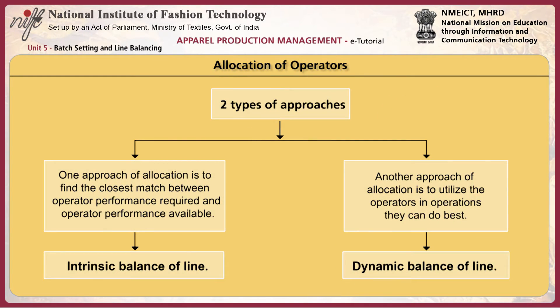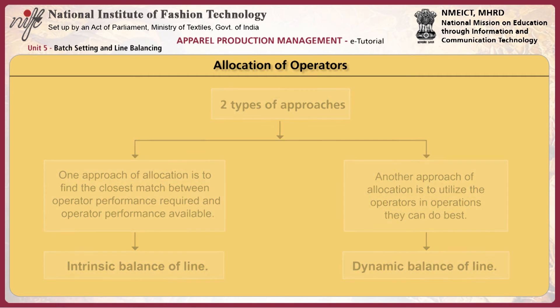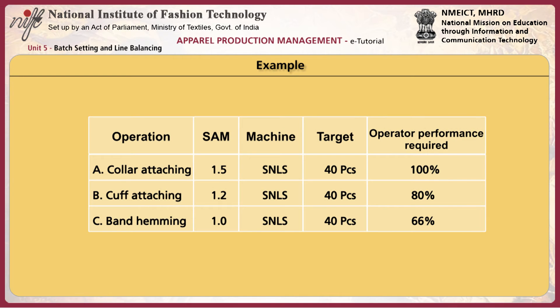Allocation of operators depends on the type of balance required. One approach is to find the closest match between the operator performance required and the operator performance available — this results in intrinsic balance of line. Another approach is to utilize operators in the operations they can do best — this results in dynamic balance of line. For example, with three operations — collar attaching, cuff attaching, and band hemming — the SAM, machine required, target output, and operator performance required are displayed alongside the operator skill inventory chart for Sita, Urmila, Rita, and Savita.